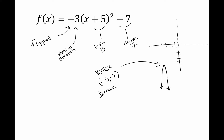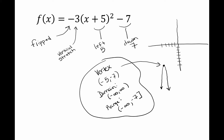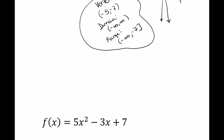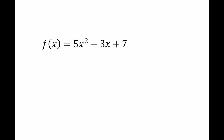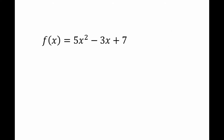My vertex is going to be at negative five, negative seven. I can tell by the picture that my domain is going to be negative infinity to infinity, and my range is going to be negative infinity up to negative seven, with a bracket. All of this information was gathered just by looking at the numbers presented.